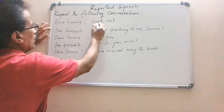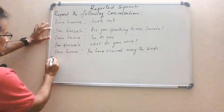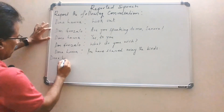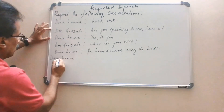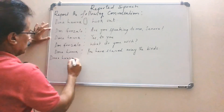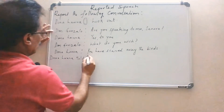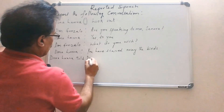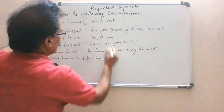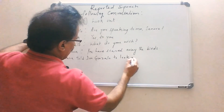Next example. First dialogue: 'Look out' — it is an imperative sentence. So we begin with Donna Laura. Remove the colon. Donna Laura told Don Gonzalo to look out.